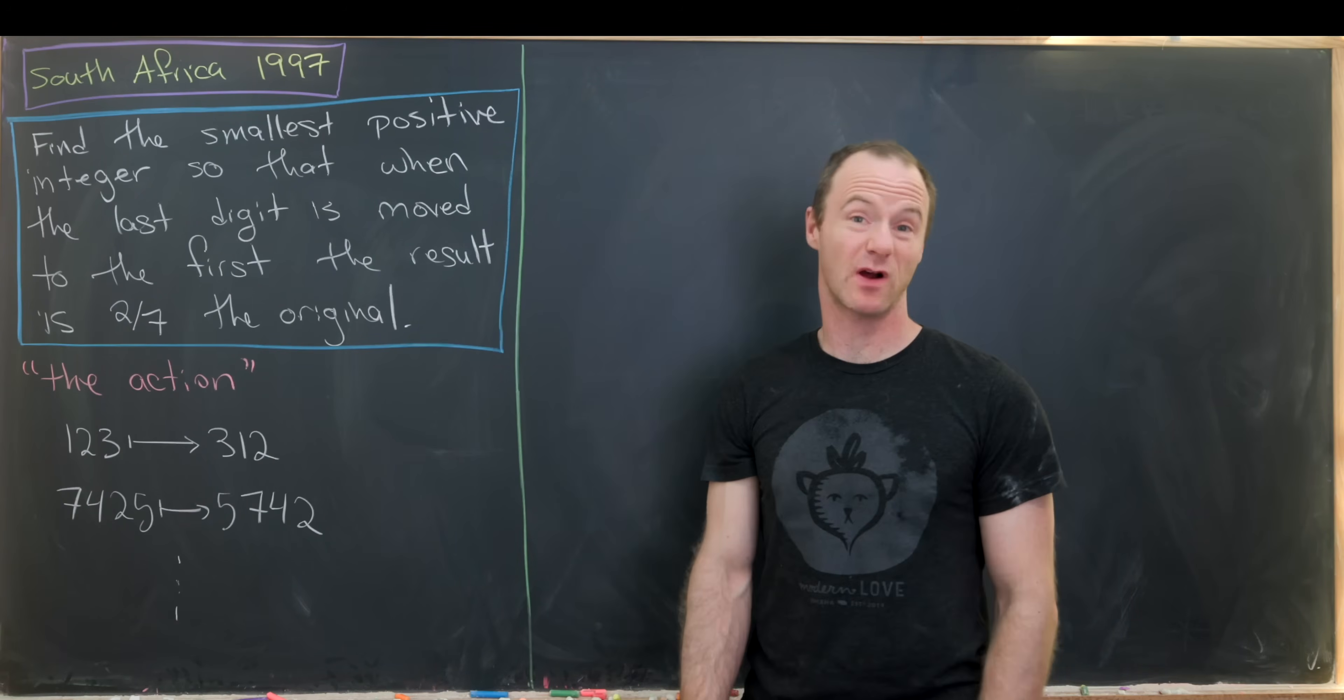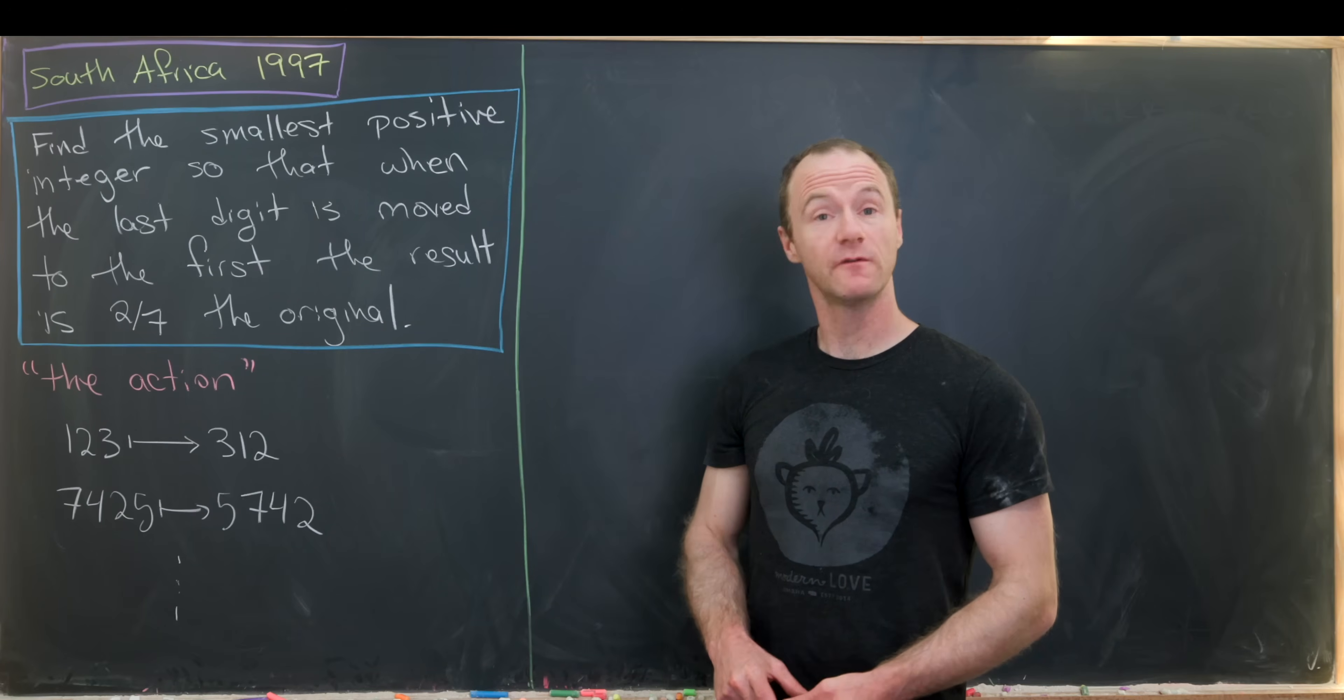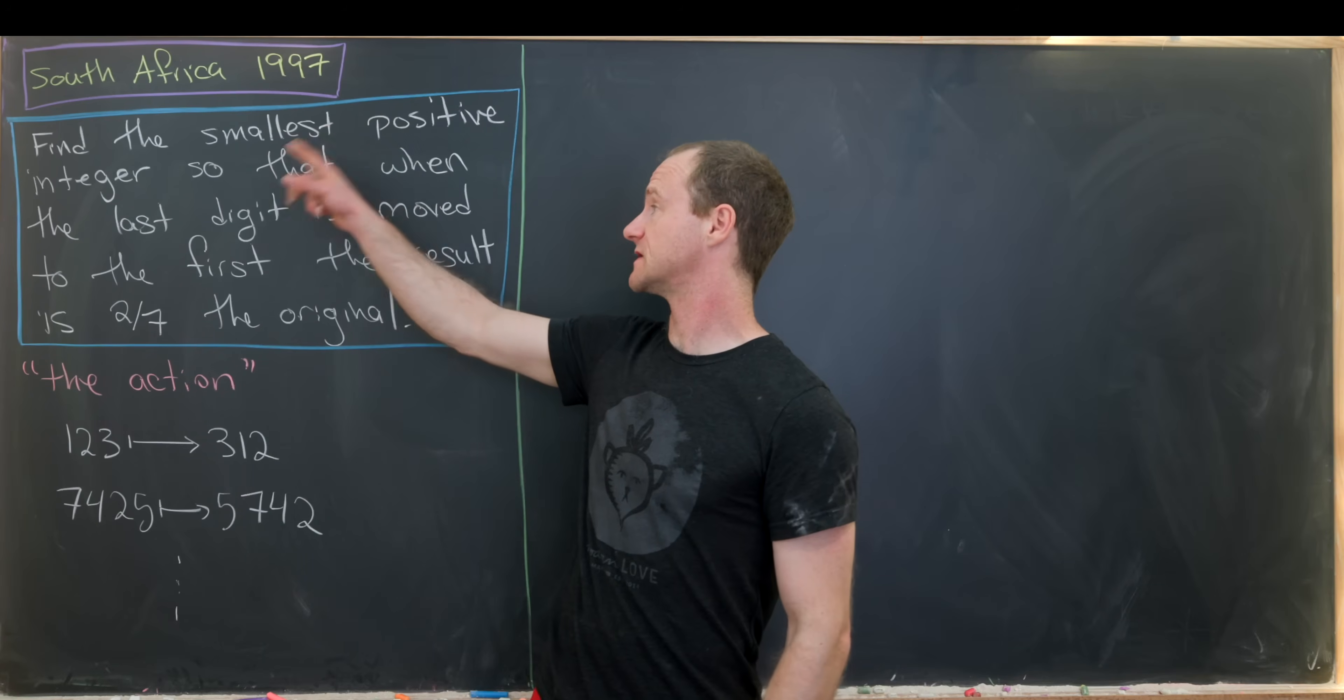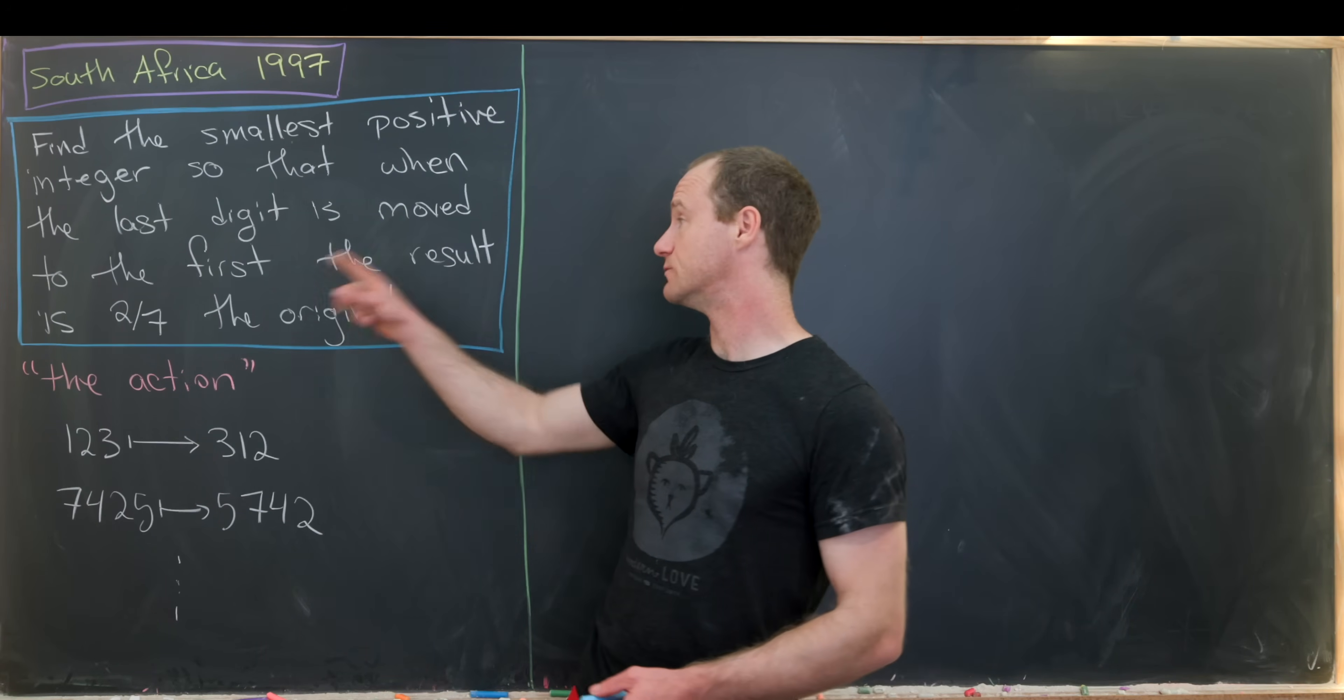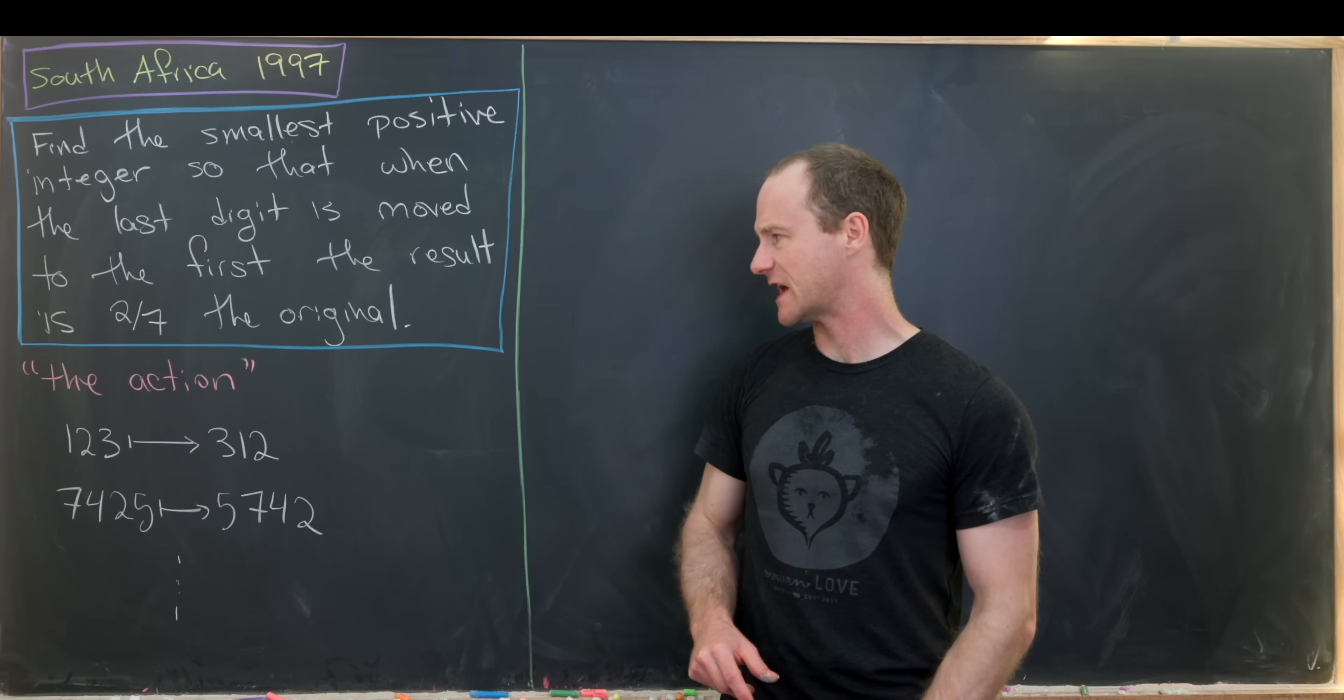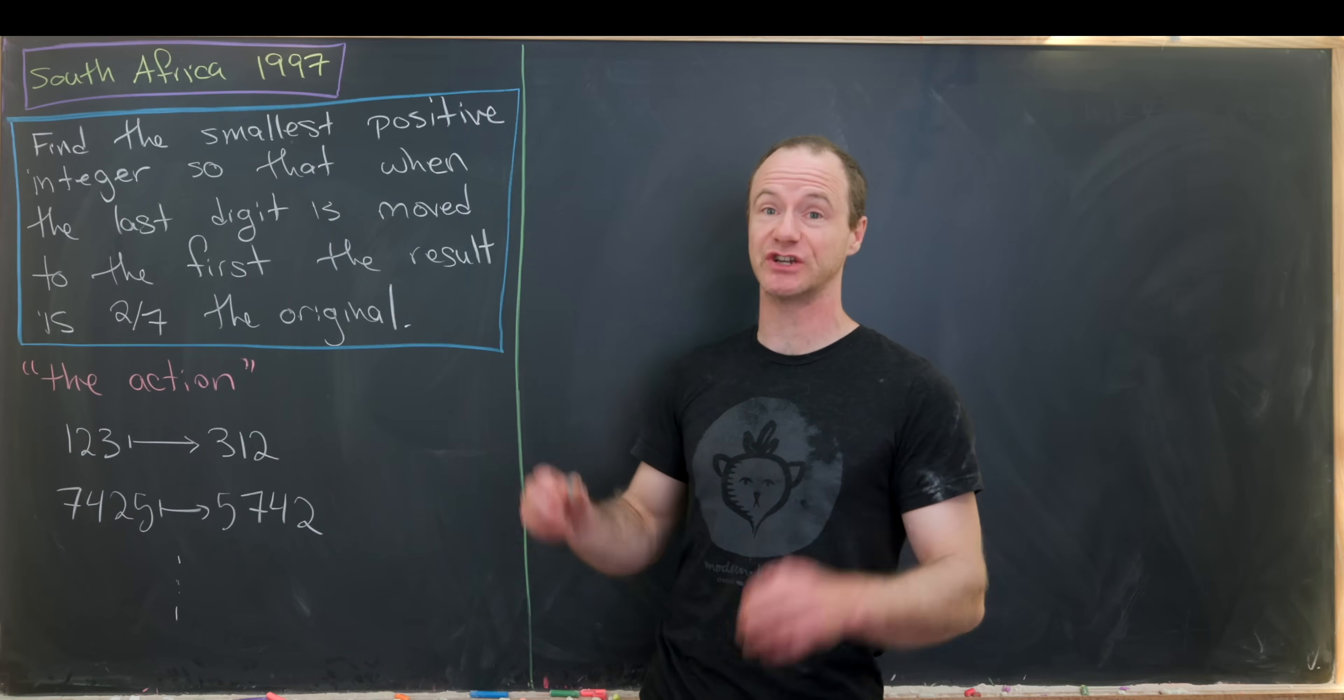Here I've got a nice number puzzle type problem that comes from a South African math contest from the year 1997. Our goal is to find the smallest positive integer so that when the last digit is moved to the first, the result is two-sevenths the original. Now before we start tackling this problem, I'd like to get a handle on what this action is.